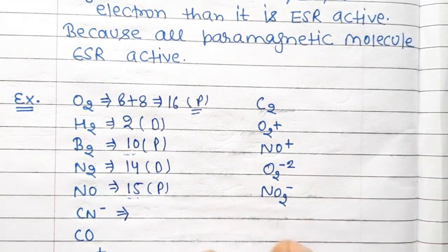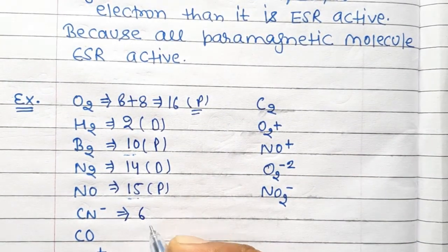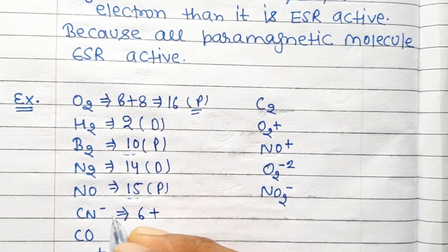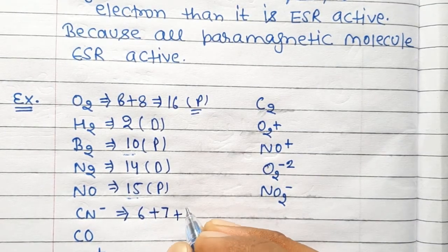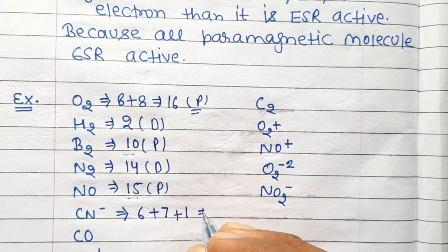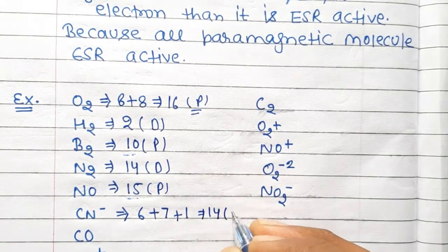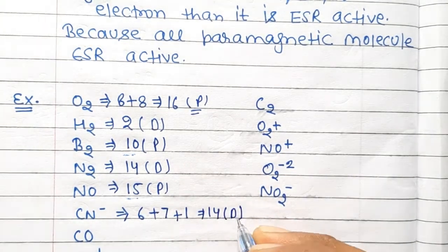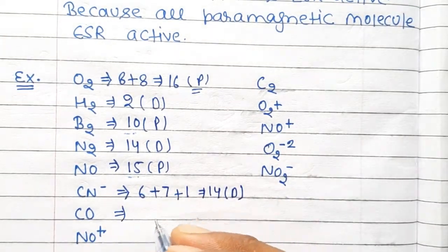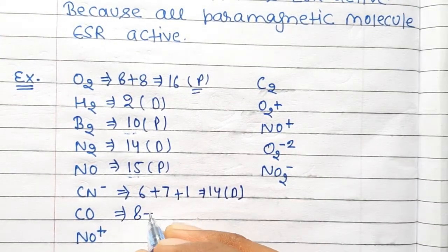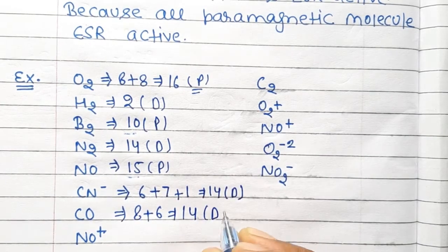Now for CN⁻: carbon has atomic number 6, nitrogen has atomic number 7, and there is one negative charge, so the total is 14 electrons. For 14 electrons it is diamagnetic in nature. For CO: 8 plus 6 equals 14, so CO is also diamagnetic in nature.